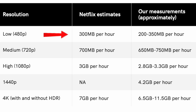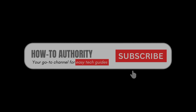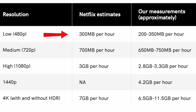Starting with low quality resolution, about 480p, Netflix says it's about 300 megabytes per hour. We found you can use as little as 200 and up to 350 per hour, so somewhere in that range. For medium at 720p, Netflix says 700 megs, and from our own testing we see about 650 to 750 in that range.